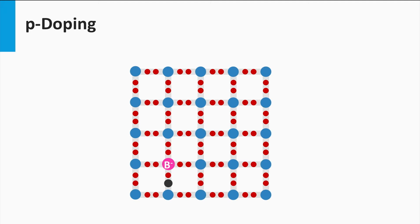This entity is the same as the hole. This extra hole is easily excited to a free mobile state as well. The boron atom left behind is not neutral anymore but becomes negatively charged. This negative charge is fixed to the position where the boron atom is residing in the lattice. The result is that by adding a boron impurity we have one extra free mobile hole available and one fixed negative charge.